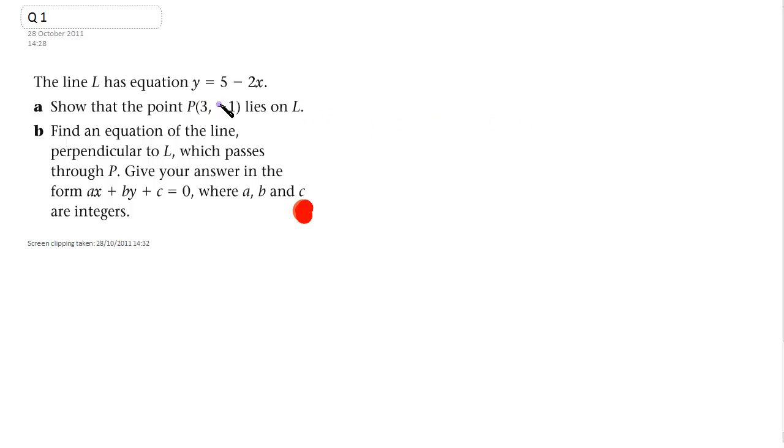That's quite straightforward. We just take one of these values. So P, we've got the point 3 minus 1. So if we let x equal the value given by P, which is 3, and we put it into that, this implies that y equals 5 minus 2 times 3, which equals minus 1.